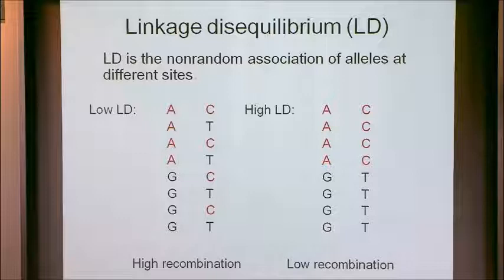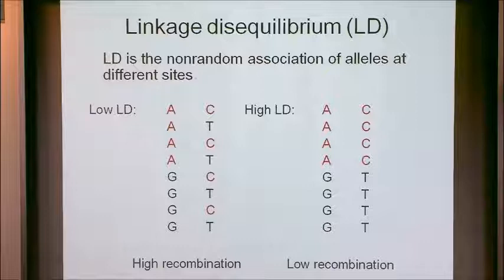The basic thought is that in general, the higher your recombination rate, the lower the level of linkage disequilibrium you observe. Conversely, the less recombination you have, the higher the level of linkage disequilibrium. There's a lot of variability in that though, and that's what makes things somewhat challenging.